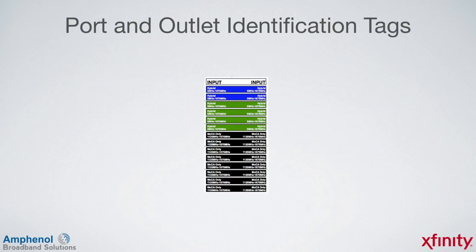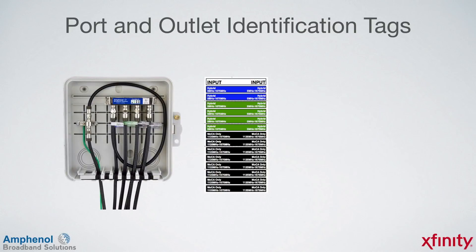Included with the DOCSIS device package are color-coded tags — two color-coded tags that correspond to each of the ports. The first tag is wrapped around the cables at the DOCSIS device to indicate which cable is connected where: blue to the H1 port, green to the H2 and H3 ports, and black to the MOCA ports. The tags are wrapped around the cables with the ends pressed together to form a flag. The other tags are placed at the outlet locations to indicate which ports they connect back to at the DOCSIS device, helping with troubleshooting and reconnection.